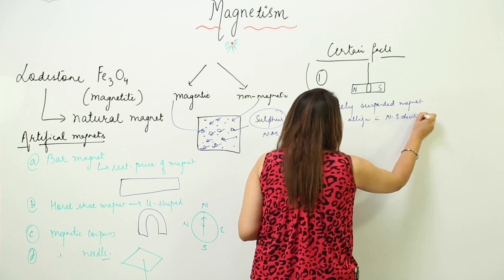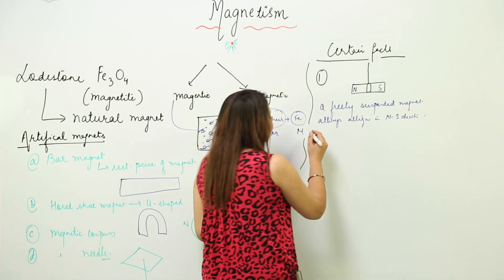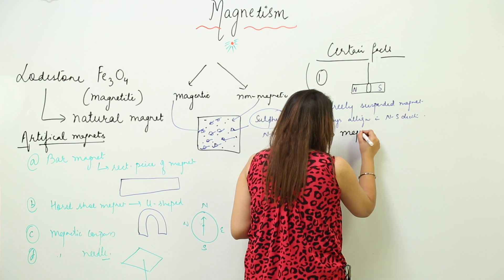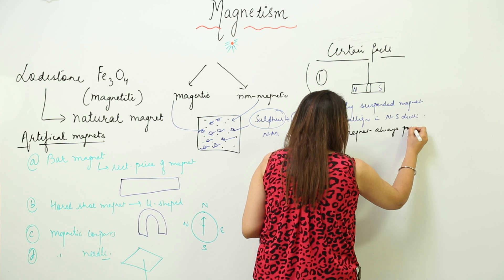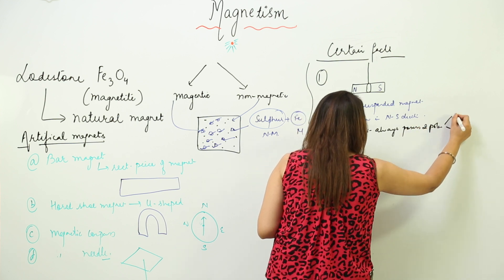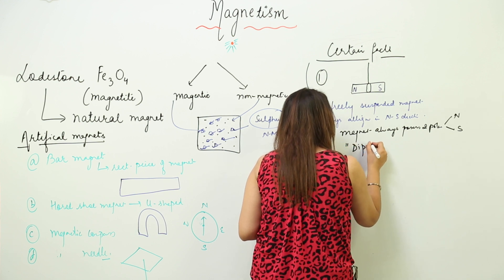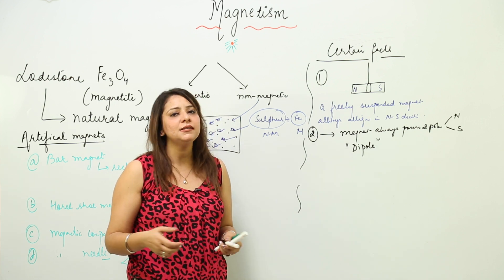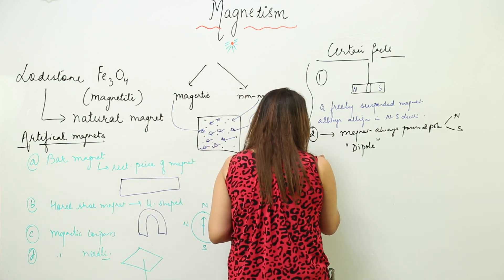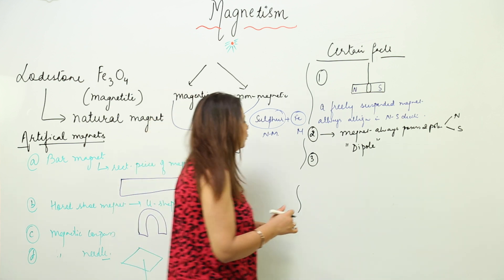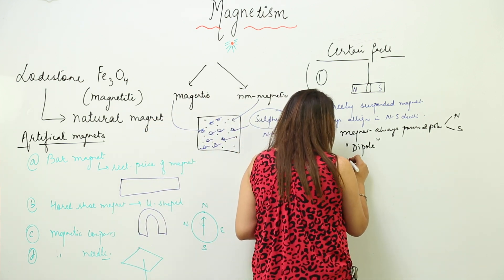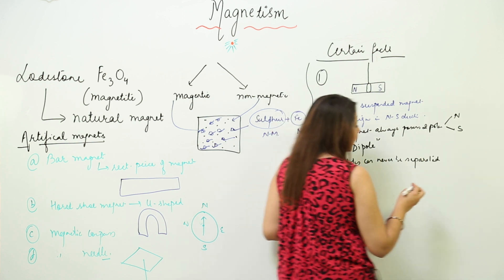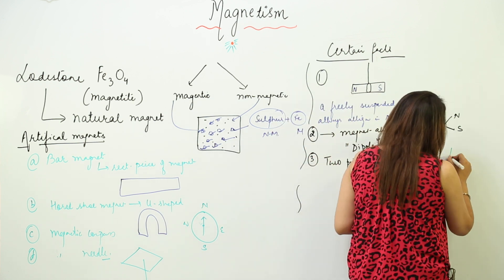So a freely suspended magnet always aligns in a north-south direction. The second important fact is that a magnet always exists as a dipole — it always possesses two poles, the north pole and the south pole. 'Di' means two, so two poles always exist in a magnet. The third fact is that these two poles can never be separated.